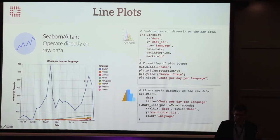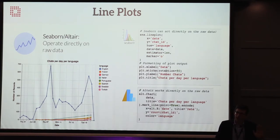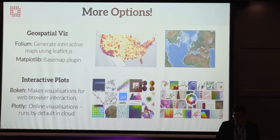So those are the fearsome foursome. Overall, the patterns are: Pandas requires more manipulation but is very good at it. Matplotlib is good for just the most basic things but difficult once you go further. Seaborn and Altair subscribe more to the grammar of graphics. Altair provides a little bit more interactivity. You need to know where you're going.